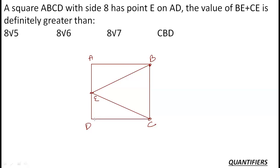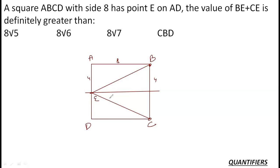Let's see how we can prove this. If E is the midpoint of AD, the side is 8, so each half is 4. Then BE = √(4² + 8²) = √(16 + 64) = √80 = 4√5. By symmetry, CE = 4√5 as well. So the minimum value of BE + CE is 4√5 + 4√5 = 8√5.